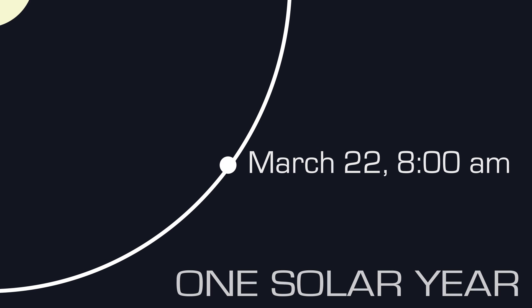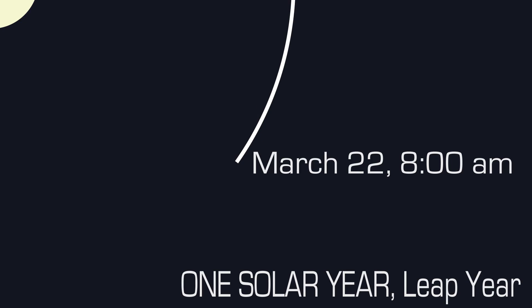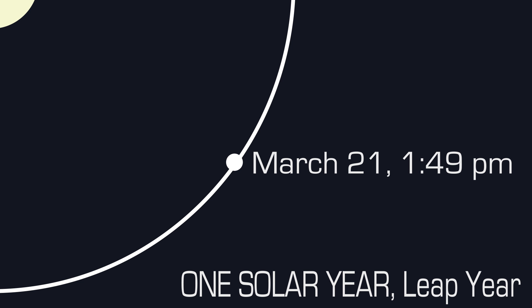What this yearly drift means for our real-world time calculations is that when we look at any given time and want to find a year from it, it's actually that same time plus five hours and about 49 minutes the next year. So for example, if we were to take a date and time at random, like say March 22nd at 8am, exactly one year from that point would be March 22nd at 1:49pm. Except if there was a leap day in between, exactly one solar year from March 22nd at 8am would be March 21st at 1:49pm.